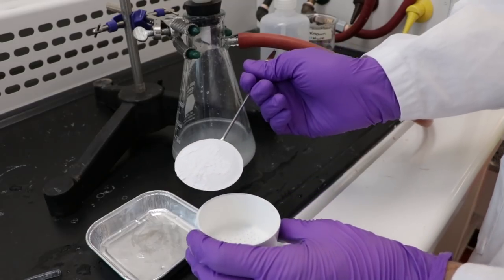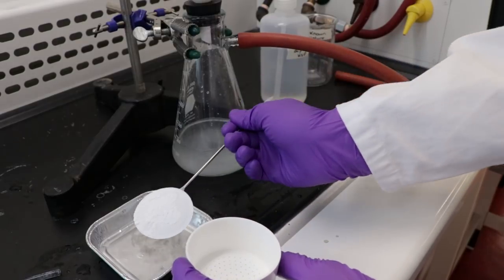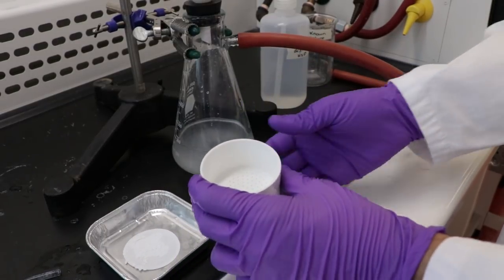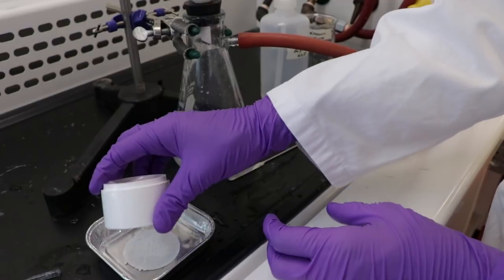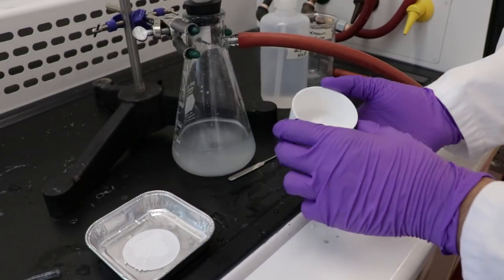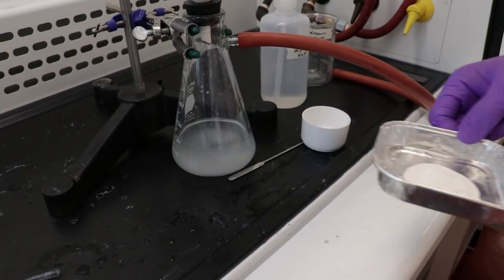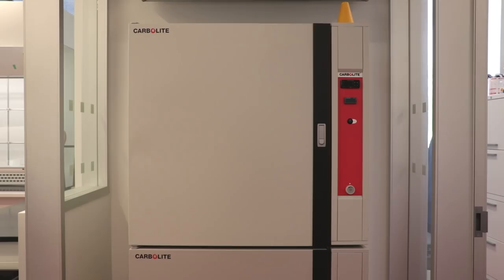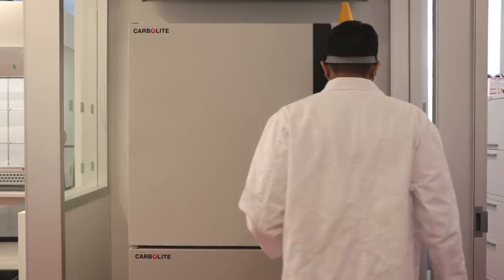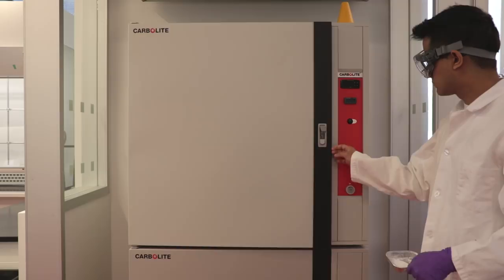Using a metal spatula, scoop the filter paper into a pre-weighed aluminum boat. Place the filter paper and aluminum boat in the oven. Heat between 30 to 45 minutes.